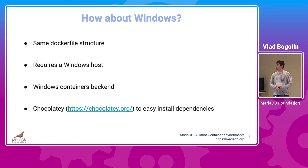Now let's talk about Windows. As it comes to Windows, we use the same Dockerfile structure. However, in order to be able to run Windows in a container, the host operating system needs to be running Windows too. Moreover, Docker needs to be configured to use Windows containers. Finally, we use Chocolatey as a package manager to be able to easily install build dependencies.